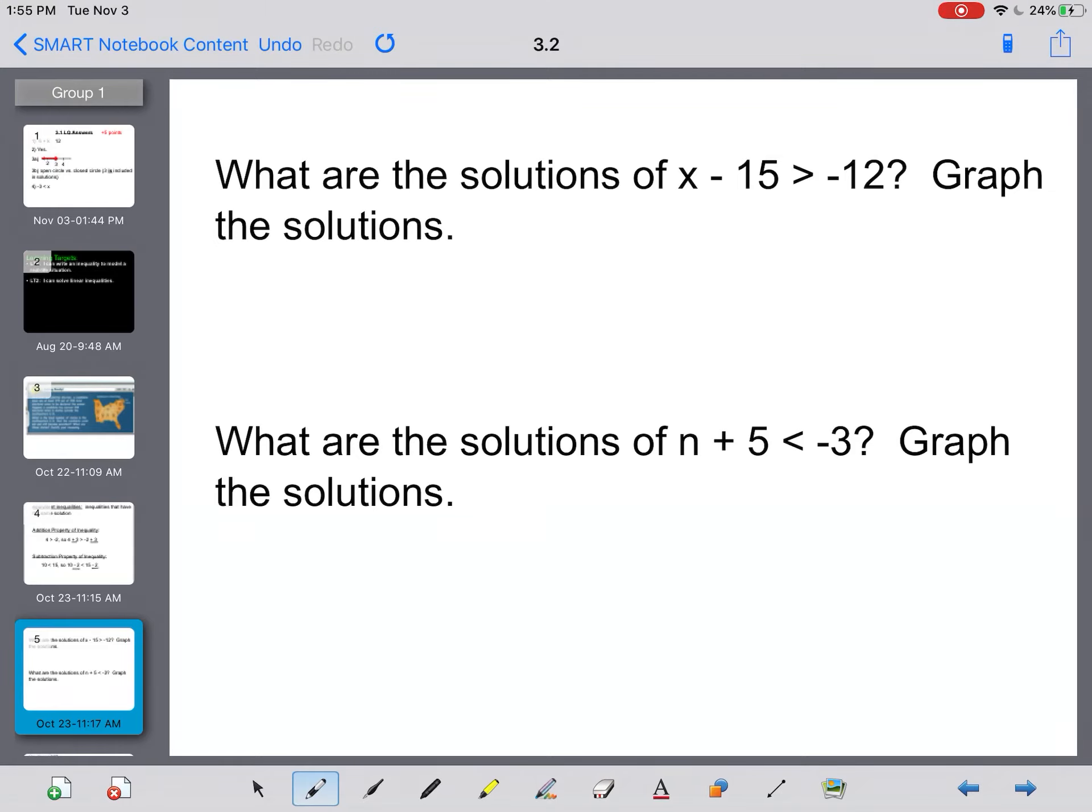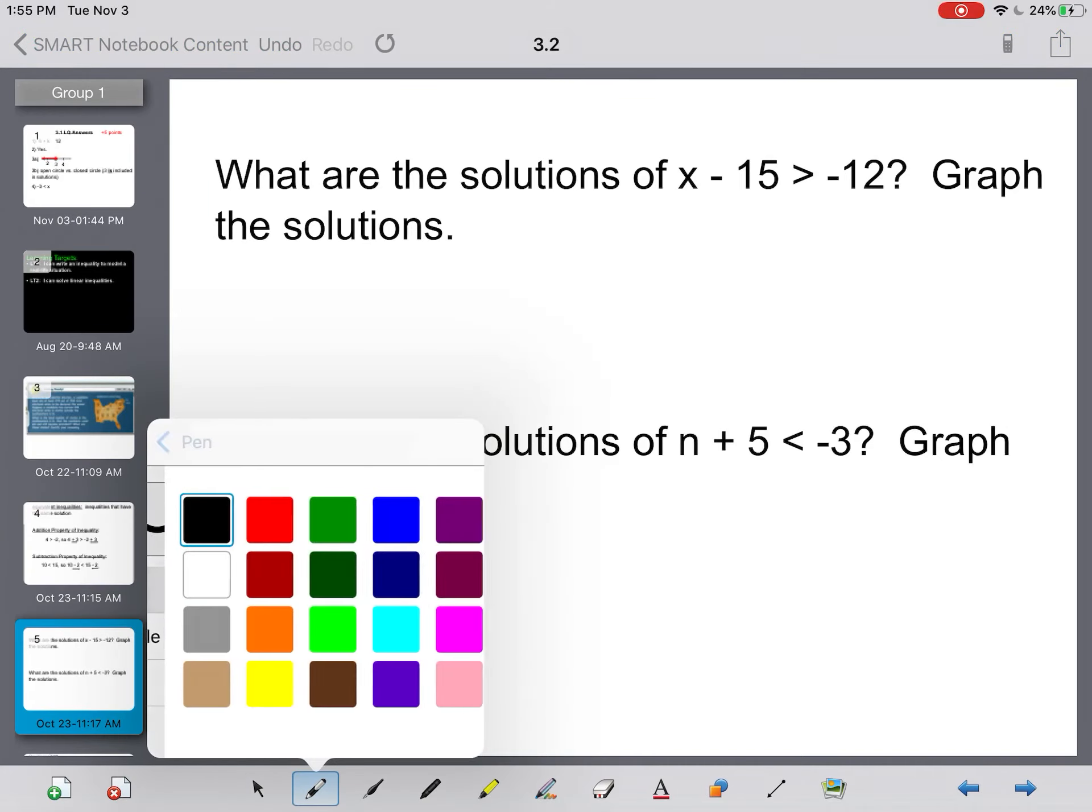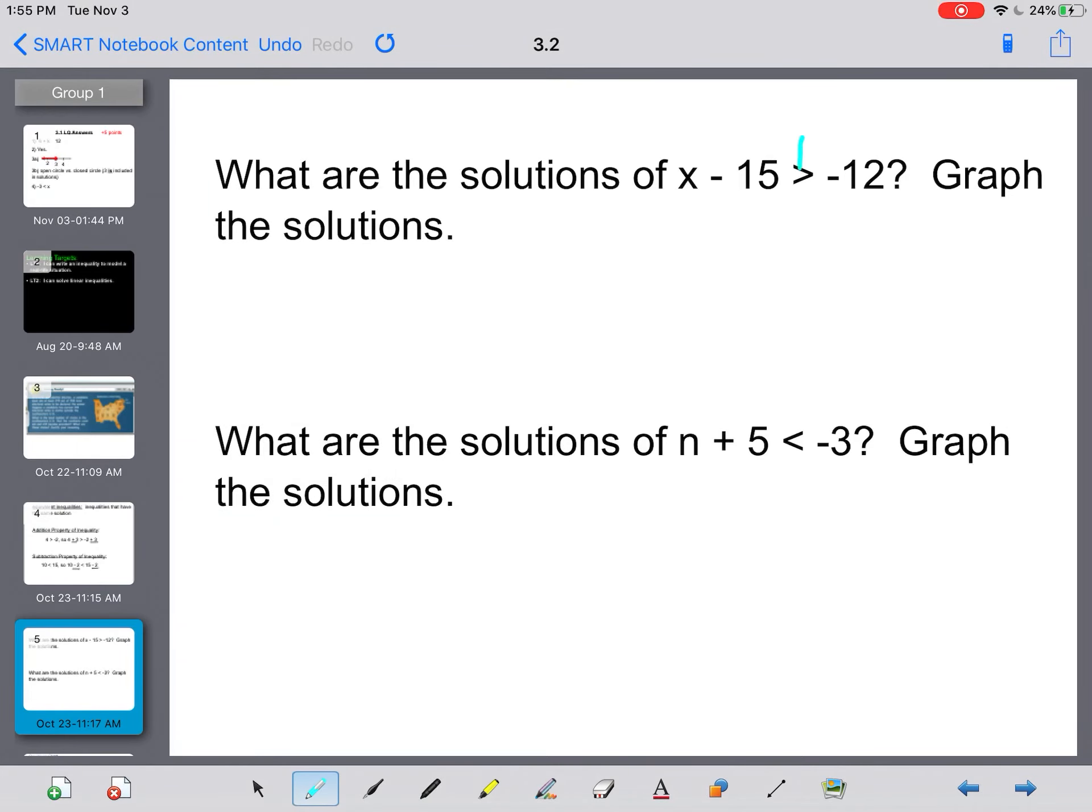Alright, what are the solutions of x minus 15 is greater than negative 12? And then graph those solutions. Alright, so just like we worked on yesterday, we're going to treat this as if it's a regular equation. We'll put our train tracks right down the inequality symbol and we're trying to get x by itself. So the opposite of subtracting 15 is to add 15. Okay, that leaves me with just x on this side, still greater than, and negative 12 plus 15 is 3.